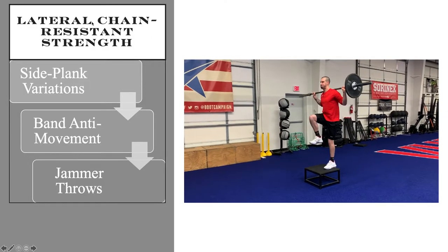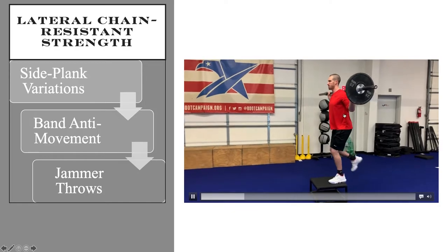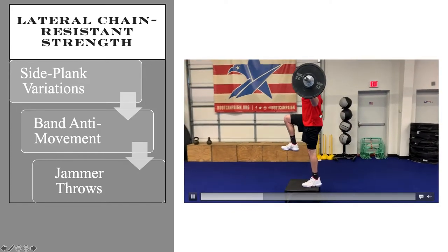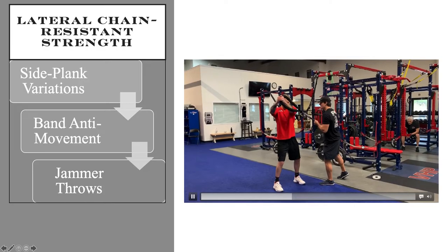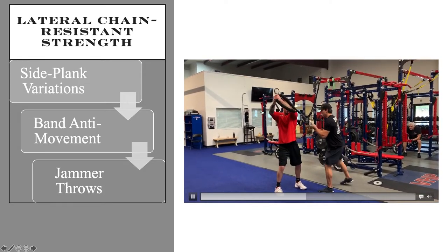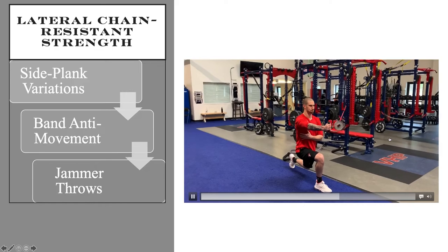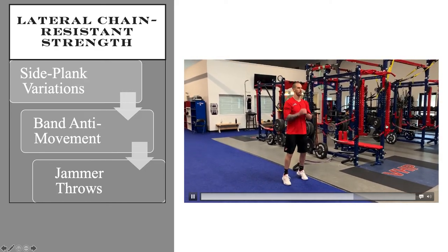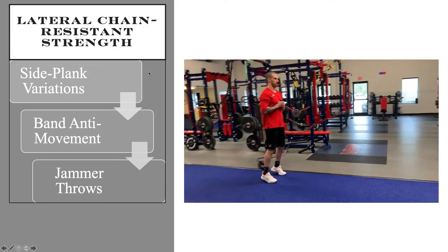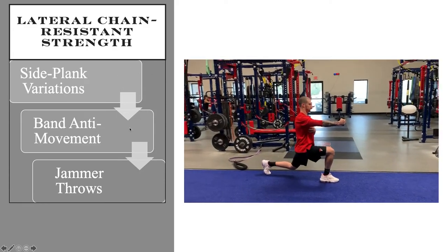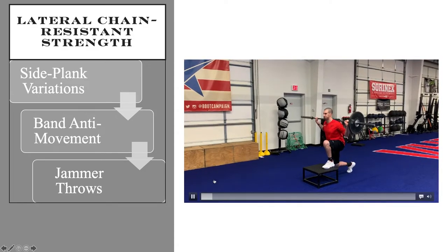For the lateral chain — resistance and strength — the offset barbell step-up keeps the torso vertical, the pillar upright, resisting lateral bending. Starting high, sticking at the midline, resisting that rotational force — with an overspeed effect added. The dynamic Pallof press is another good one, resisting rotational force. Your basics are side plank variations, band anti-movements, and jammer or med ball throws — the whole goal being resisting lateral forces.